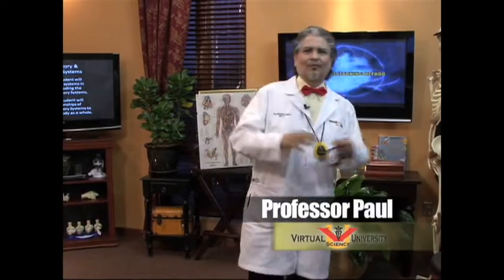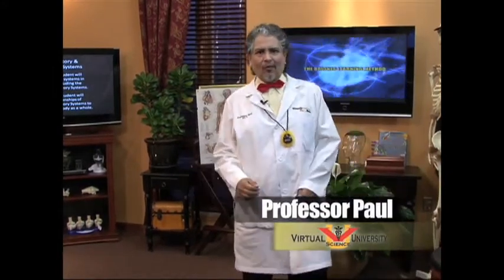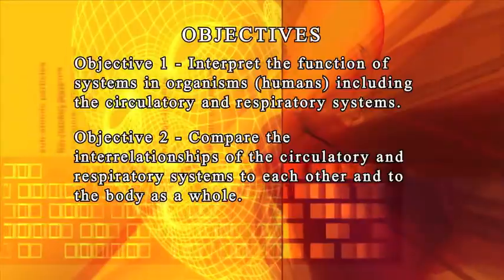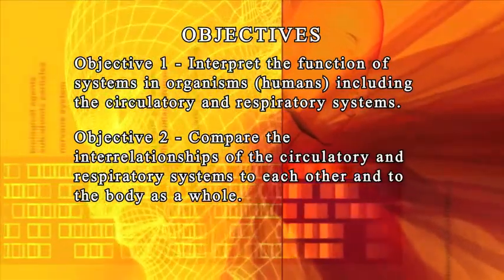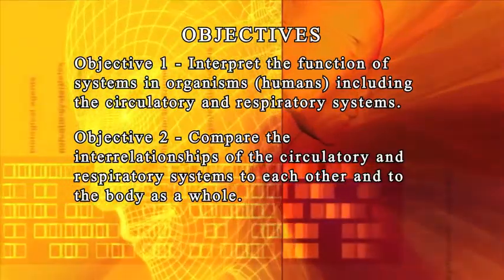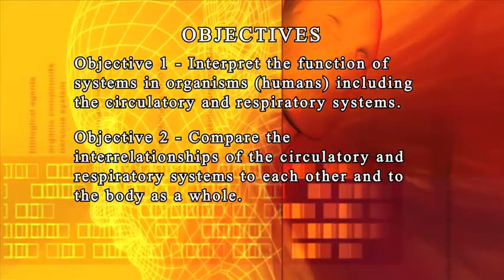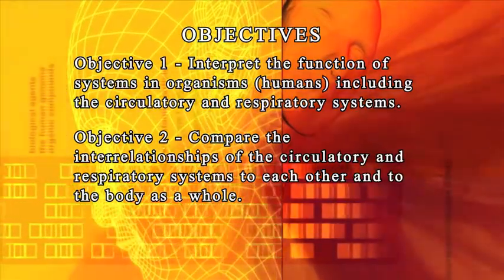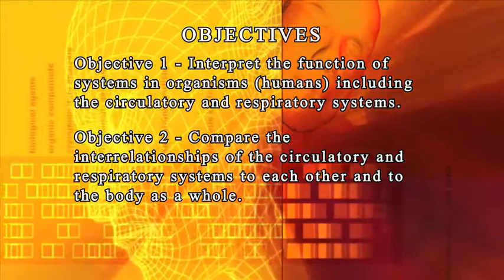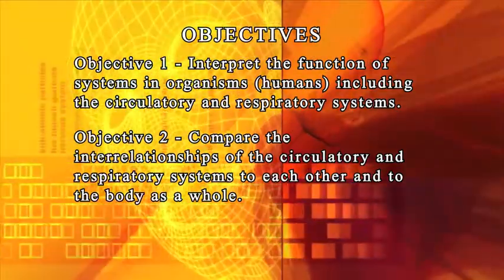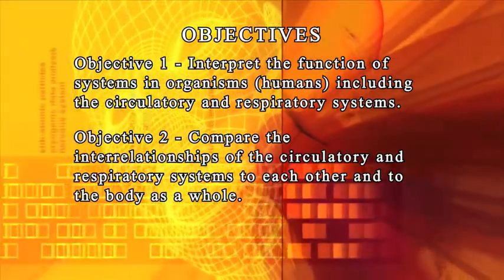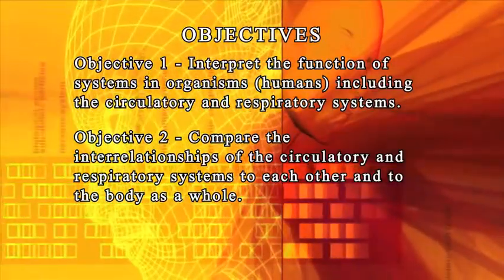Today we're going to have a lot of dynamite here. We've got a lesson over the circulatory system. The student will interpret the functions of systems and organisms in specific humans, including the circulatory and respiratory system. Then the student will compare the interrelationships between the circulatory system to each other and to the body as a whole.